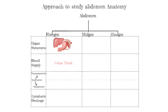Next, we'll be talking about the innervation of the foregut. Parasympathetic innervation, which is part of rest and digest, is going to be from the vagus nerve. Sympathetic is going to be from the greater thoracic splanchnic nerve, from T5 to T9. For lymphatic drainage, all the drainage from the foregut is going to end up in the celiac group of lymph nodes.